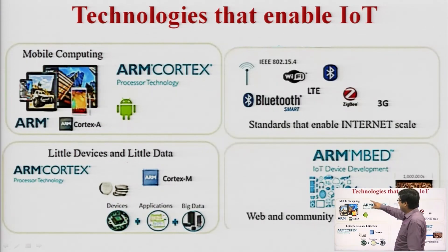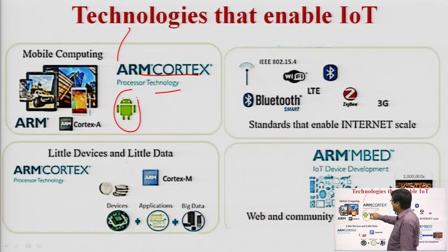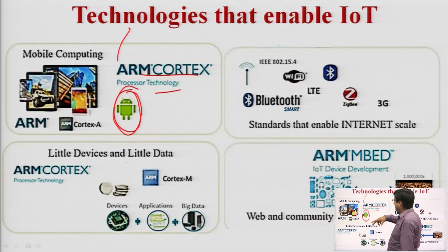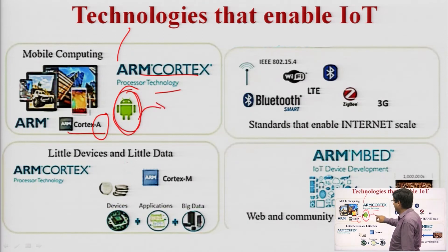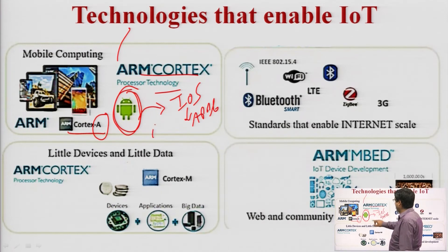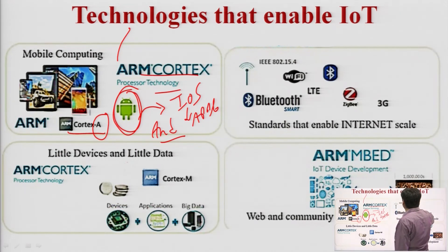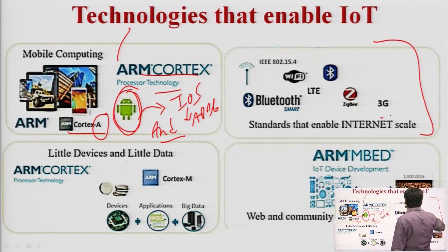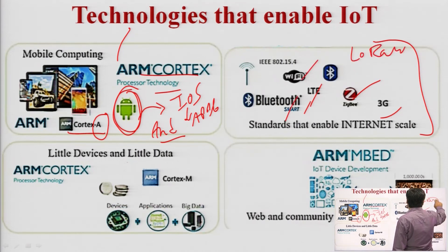Mobile computing uses ARM Cortex processors. In mobile phones we use ARM Cortex A (application) processors running iOS (Apple devices) or Android. IoT devices use various wireless technologies including 3G, Zigbee, LTE, Bluetooth, Bluetooth Low Energy, Wi-Fi, and LoRaWAN (Long Range Wide Area Network). These wireless technologies follow standards such as IEEE 802.15.4 — globally acceptable standards that all manufacturers must follow.